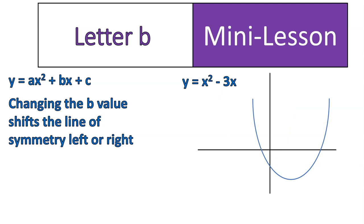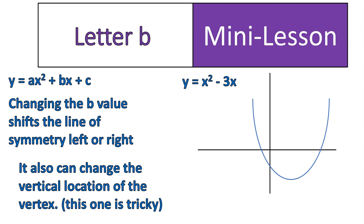So you're noticing that if it's a negative B value, it shifts it to the right. If it's a positive B value, it shifts it to the left, which is opposite of how we usually think. But it also changes the graph up and down. So this one here is a little tricky. So we don't say it moves the graph left or right. We say it moves the line of symmetry left or right.